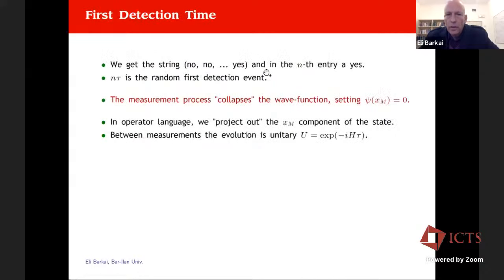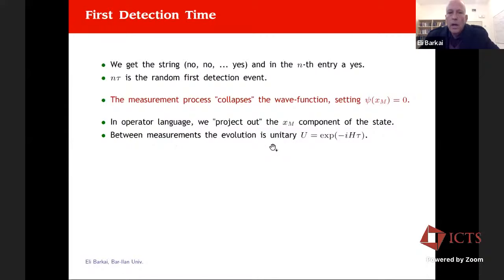We get the string no, no, no, and then yes at the nth entry, and n times tau is the random first detection event. The measurement process collapses the wave function each time you get a null result, setting the amplitude on the detected side to zero. In operator language, we project out the x_m component every time we measure a null. We have a measurement dynamics combining unitaries and projections, with the Hamiltonian describing dynamics between measurements at timescale tau. Many problems arise: will you detect the particle eventually, at what time, and what are the best Hamiltonians for fast, efficient search?